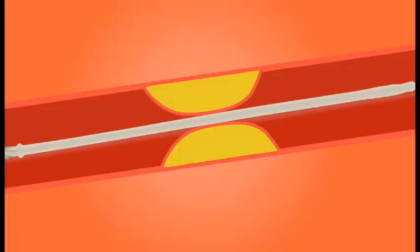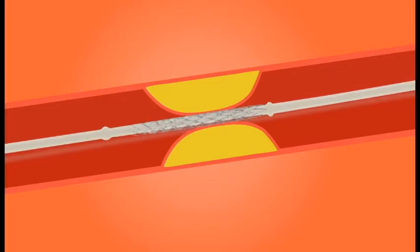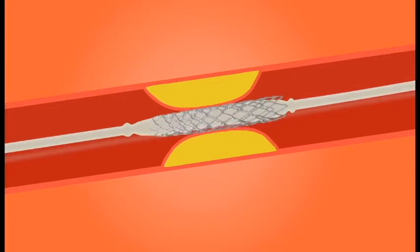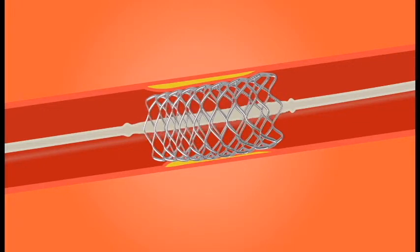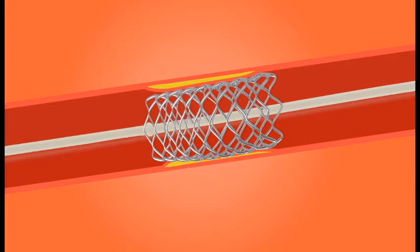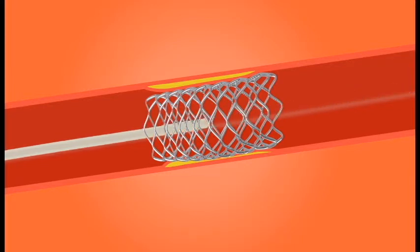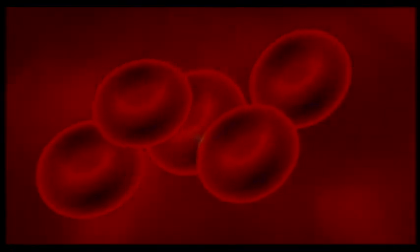The standard practice is to insert a balloon-tipped catheter into the artery and move it to the location of the blockage. This balloon has the wire mesh stent wrapped around it. When the catheter is in the proper position, the balloon inflates to expand the mesh stent, then deflates and is removed, leaving only the expanded wire stent in place. Now that the stent has expanded the formerly constricted artery, the optimal amount of blood flow is once again possible. This process is more formally known as coronary angioplasty.